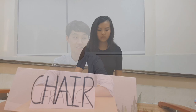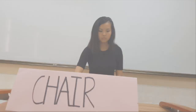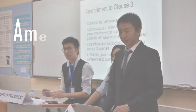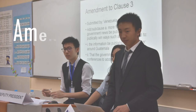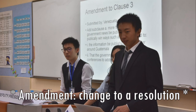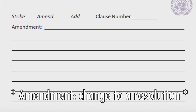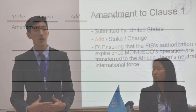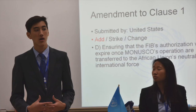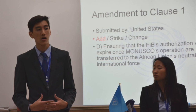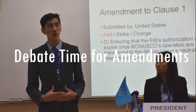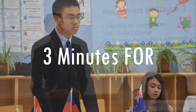Another way to use this time is to improve the resolution by submitting amendments. An amendment refers to a change you wish to make to a resolution. An amendment can be made to strike, add, or insert words or phrases to a clause. The debate on an amendment is similar to the debate on a resolution. When an amendment is submitted, the chair sets a debate time — usually three minutes for delegates to speak for the amendment, and another three minutes for delegates to speak against it.